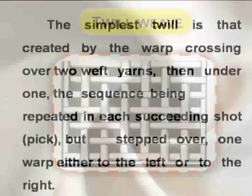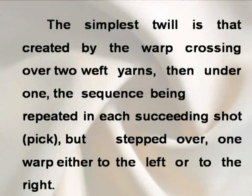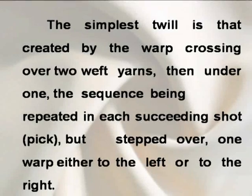The simplest twill is that created by the warp crossing over two weft yarns, then under one, the sequence being repeated in each succeeding shot, that is pick, but stepped over one warp either to the left or to the right.